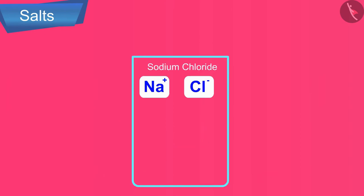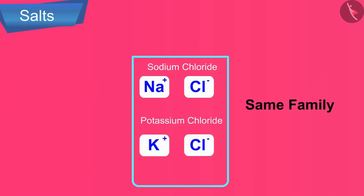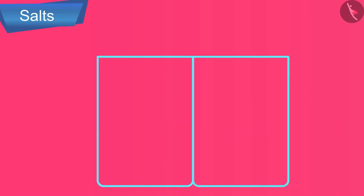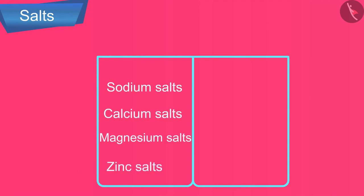Similarly, sodium chloride and potassium chloride belong to the same family because they have same negatively charged ion, that is Cl minus ions. Some of the important families of salts are sodium salts, calcium salts, magnesium salts, zinc salts, carbonate salts, and acetate salts.